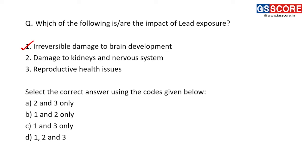Second statement: damage to kidneys and nervous system — this is also an impact of lead exposure. Lead pollution can cause high blood pressure, damage the brain, impact the kidneys, and affect reproductive health as well. So all three statements are correct: lead affects brain, kidney, reproductive health, and causes high blood pressure. The answer is D — 1, 2 and 3.